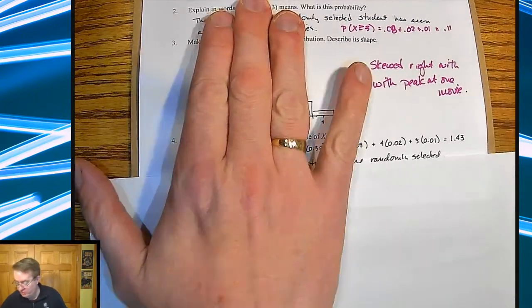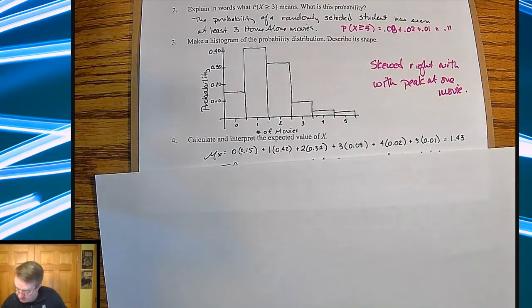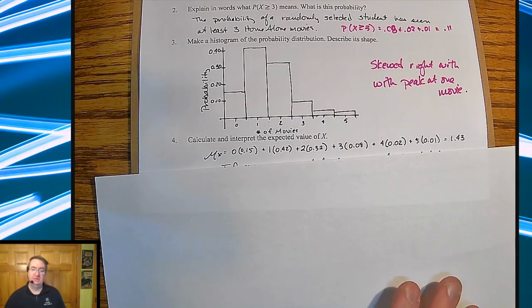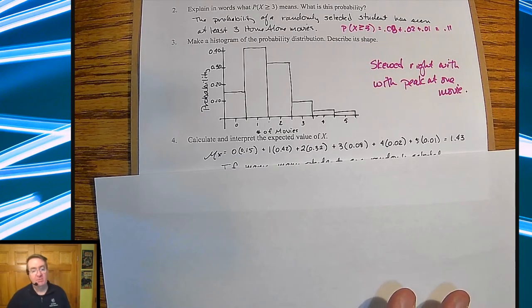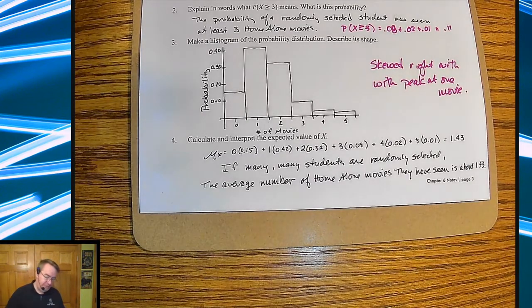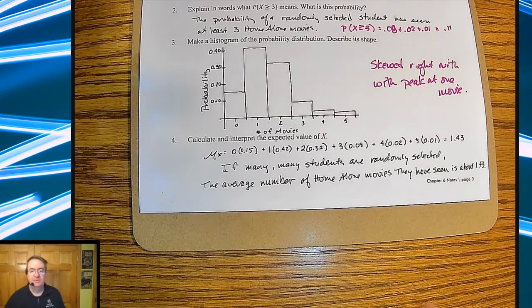So we get 1.43 movies. Now, the meaning of this is the following. Since we're talking about a probability average, phraseology is important. If many students are randomly selected, the average number of Home Alone movies they have seen is about 1.43. We say about because we're rounding this number.